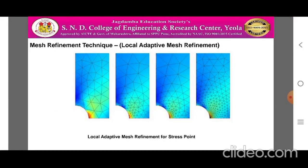Local adaptive mesh refinement differs from global adaptive mesh refinement in that the error is evaluated only over some subset of the entire model space with respect to a specific metric. For example, it is possible to refine the mesh such that stresses at the boundary of a hole are more accurately resolved. This meshing strategy will still remesh the entire model with the objective of reducing the error in one region. If a logical and desirable local metric exists, the local adaptive approach is superior over the global adaptive mesh refinement technique.